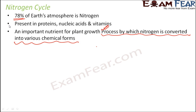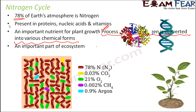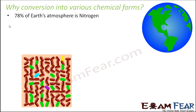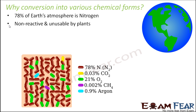So why do we need to convert nitrogen into so many different chemical forms? Even though nitrogen is present in huge amounts in the atmosphere, the problem is that it is non-reactive and unusable by plants. Plants cannot take in nitrogen as it is from the atmosphere, and the atmospheric nitrogen doesn't react with any other element to form a compound usable by plants.